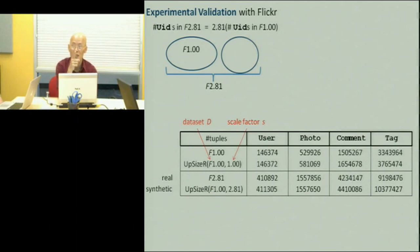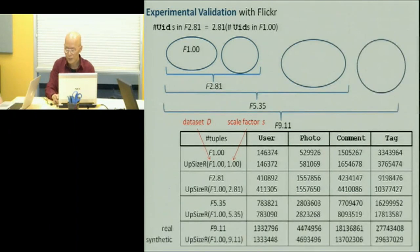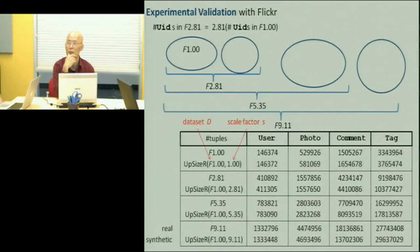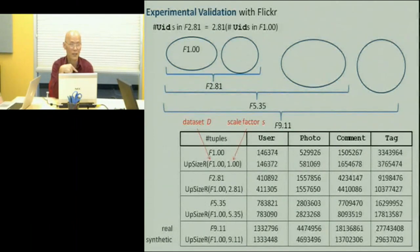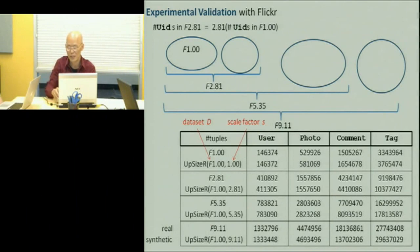F2.81 just means that the real dataset is 2.81 times F1, and I'm using F1 to upsize it to 2.81. The one that jumps out is the comment table upsized by nine — the error is quite big, and we don't understand why. Somebody suggested that maybe comments have a kind of recursive thing where suddenly it goes exponentially. But remember, similarity is going to be measured by queries, so let me show you how that goes.